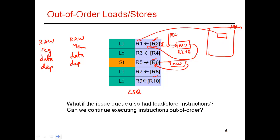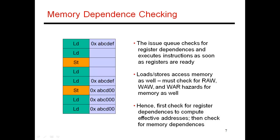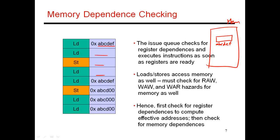After a few cycles have elapsed, the load-store queue might look something like this: for every load and store, if the address is known, it is placed in the load-store queue. For the first load, the address in hexadecimal format is ABCDEF. The load, store, and load that don't yet know their effective address - because those register values have not yet been made available - those entries remain blank.